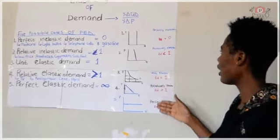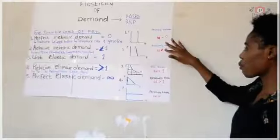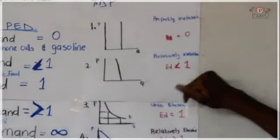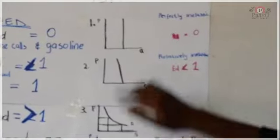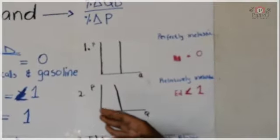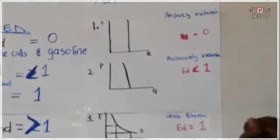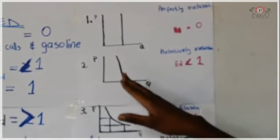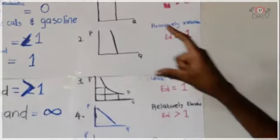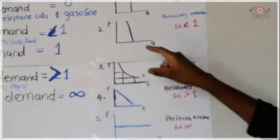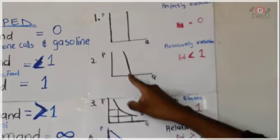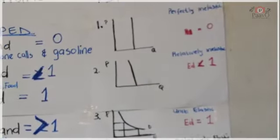If you look at the cases, they are well represented by graphs. For perfect inelastic demand, if the price changes, quantity demanded remains the same. For relative inelastic demand, there is a slight change between quantity demanded and price changes — if the price goes up, there will be a slight change. You can see the line is not straight but a bit skewed.